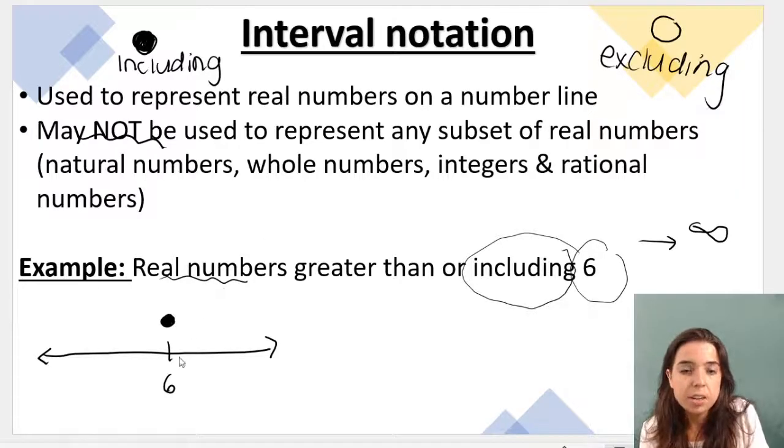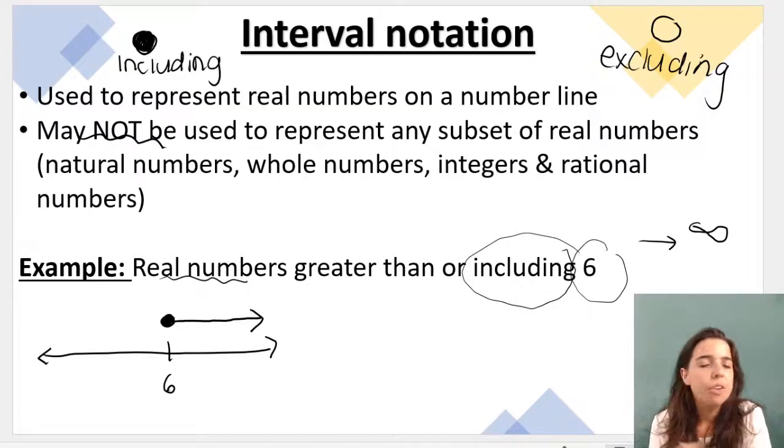So it's including 6, and now it stretches in the positive direction, but it goes all the way to infinity. So we just use an arrow that extends in the positive direction, implying that our set is going to go up to infinity, positive infinity.